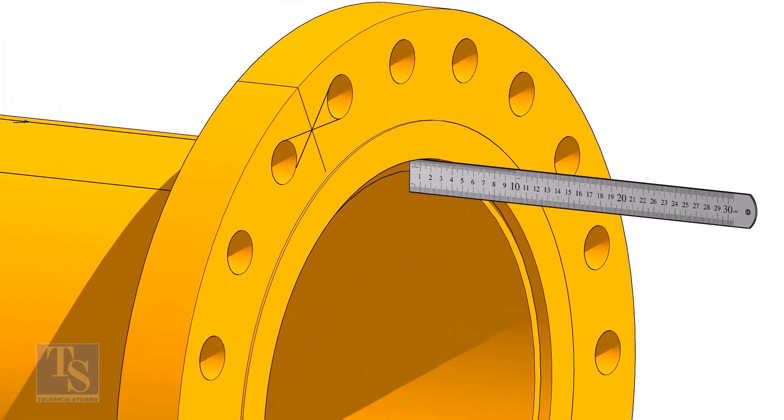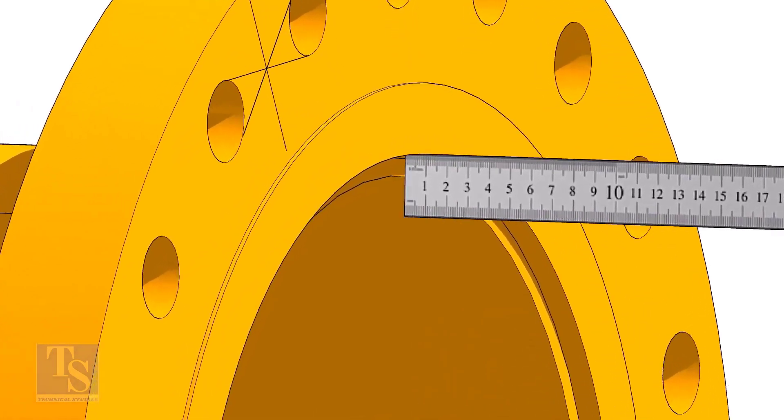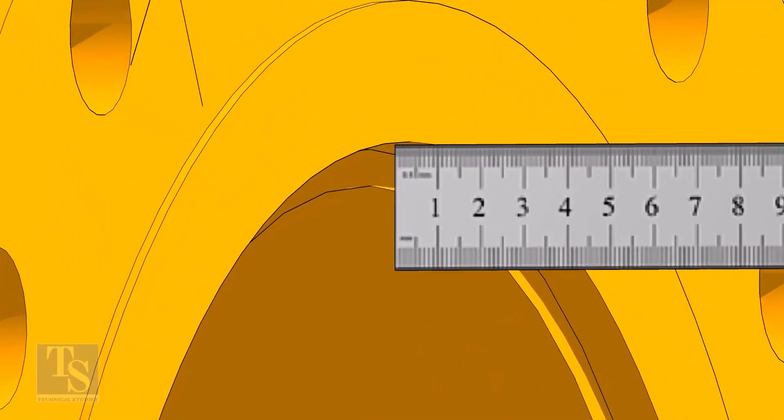Fix the distance between the flange face and the pipe face. Usually, this measurement is equal to the thickness of the pipe.